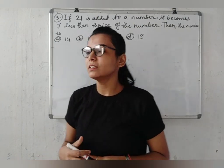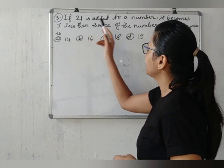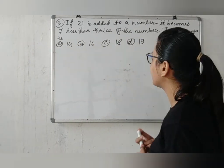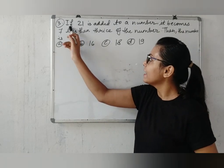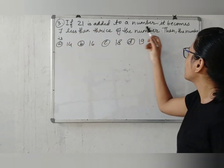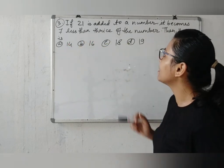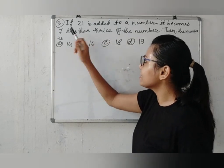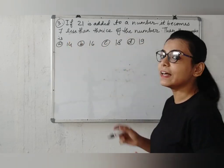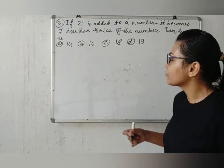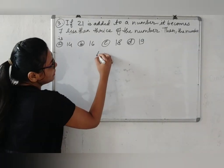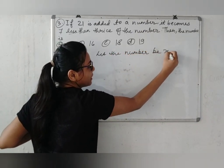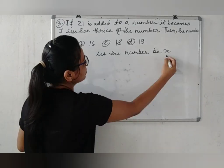Now come to the last question. Question 3: If 21 is added to a number, it becomes 7 less than thrice of the number. Find the number. The question says if we add 21 to the number, it becomes 3 times the number minus 7. We need to find that number. Let the number be x.